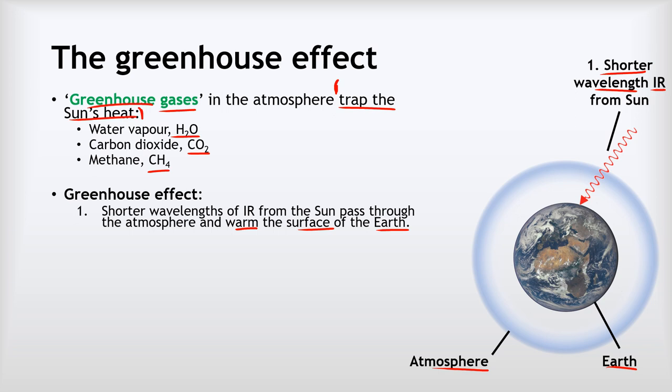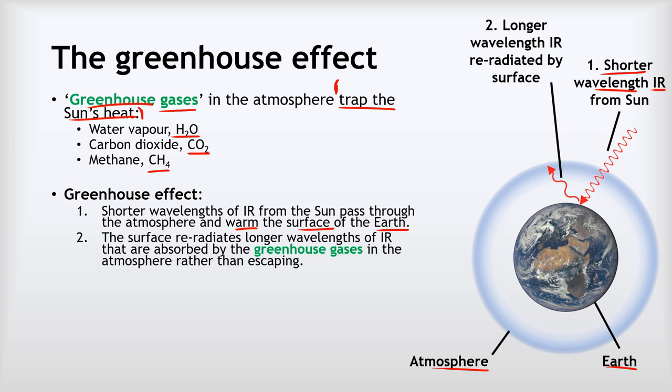All objects as they warm up start to emit infrared radiation. The surface re-radiates longer wavelengths of IR — notice the wavelength of this re-emitted wave is longer. That longer wavelength radiation is not able to pass back out through the atmosphere and gets trapped, absorbed by the greenhouse gases.